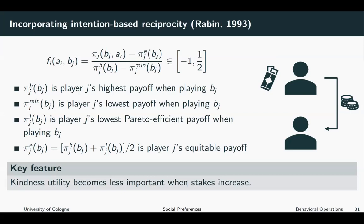The kindness of the other player is very similar. The only difference is that when measuring the kindness of the other player — or my belief about the kindness of the other player — it does not depend on my action and my belief about the other's action, but rather on my belief of the other's action and my belief of the other's belief of my action. All the rest stays the same, and we will see it in an application later.